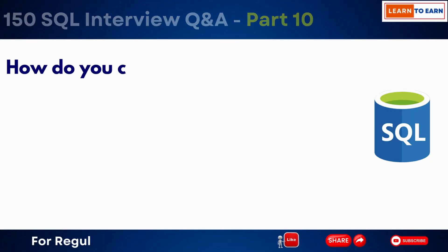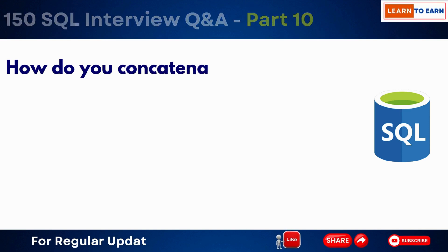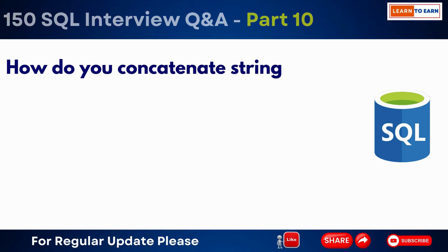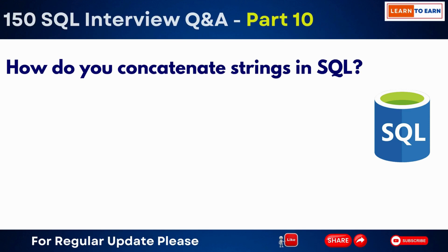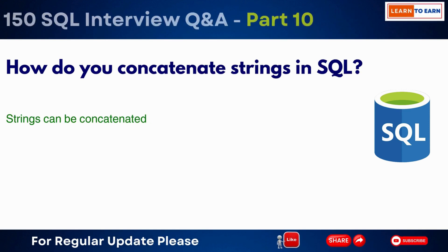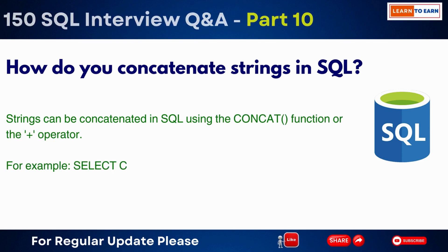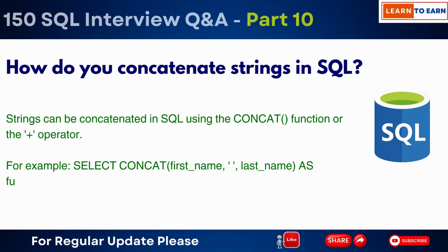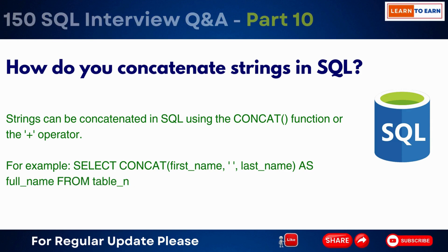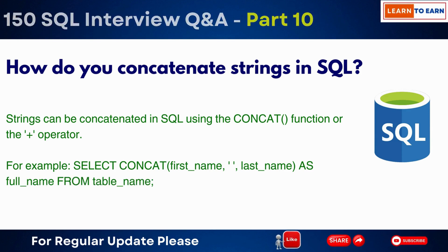How do you concatenate strings in SQL? Strings can be concatenated in SQL using the CONCAT function or the plus operator. For example: SELECT CONCAT(first_name, ' ', last_name) AS full_name FROM table_name.